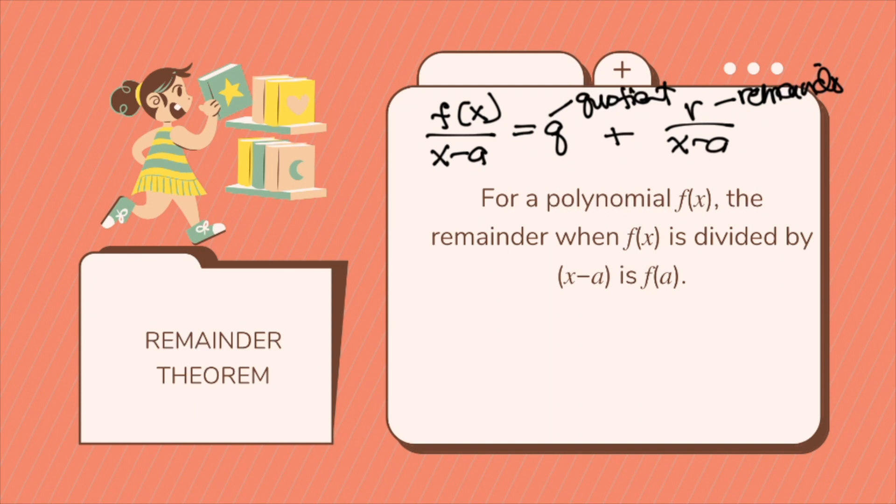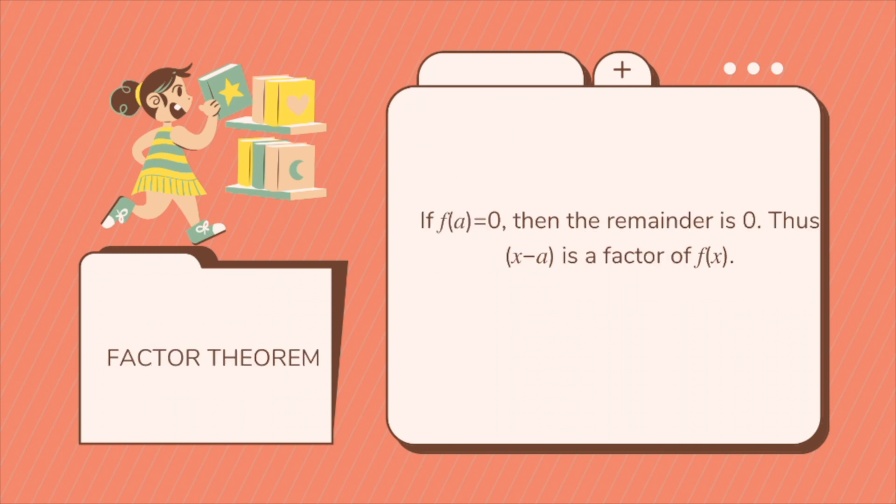Now, if we have this, then we will have the two theorems. For a polynomial, the remainder when f of x is divided by x minus a will be f of a. However, if we have the factor theorem, if f of a is equal to 0, then the remainder is 0. Thus, x minus a is a factor of f of x.